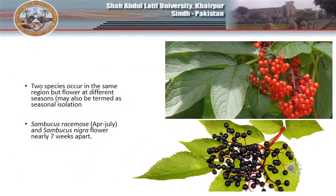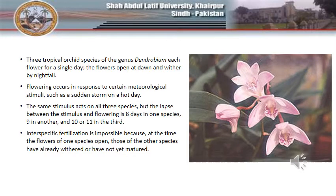Another example of seasonal isolation exists in two elderberry species, Sambucus racemosa and Sambucus nigra. These species are capable of interbreeding; however, they flower nearly seven weeks apart. Dendrobium species of tropical orchids flower for only one day — the flowers open at dawn and wither by nightfall. Flowering occurs in response to certain stimuli, but the lapse between stimulus and flowering is eight days in one species, nine in another, and ten or eleven in a third, making interspecific fertilization impossible.